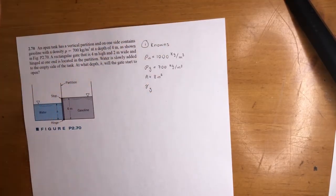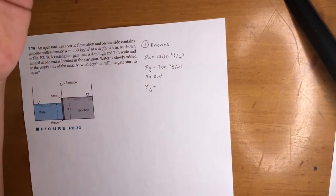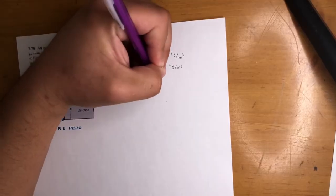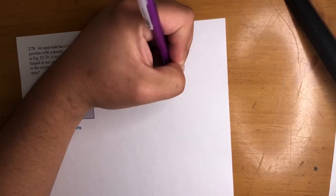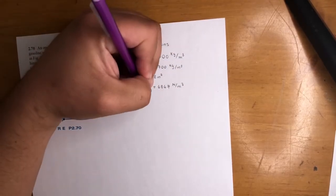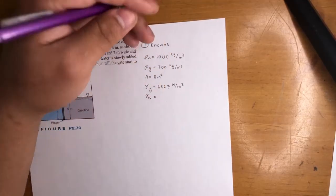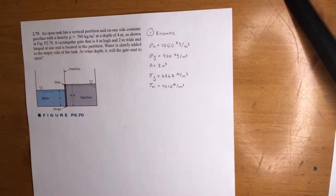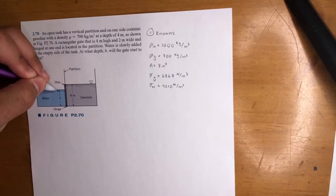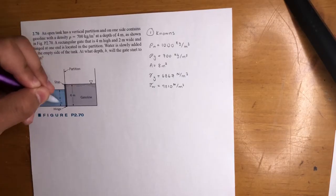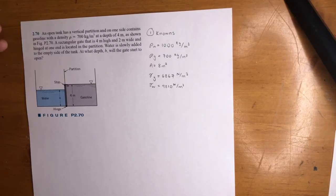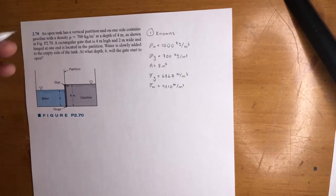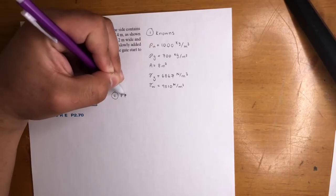So using density, we're able to find our gammas. Gamma of gasoline, that one is equal to, just multiply these by 9.8, you'll get 6,867 newtons per meter cubed. And gamma of water is 9,810 newtons per meter cubed. Alright, so this problem is the same subject as the previous one, right? We want to see at what distance, at what height, assuming we're filling this up, will it start to open, pretty much go that way. So there's a hinge here, that means it's going to turn that way. We want to find that height.